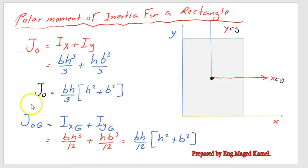Add them together will give us a polar moment of inertia which will be equal to BH over 3, and we open one bracket, we multiply by H squared plus B squared.